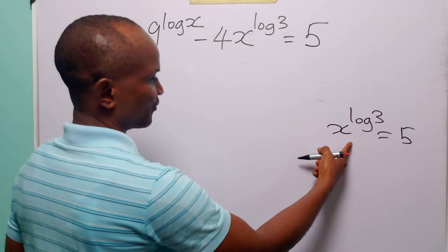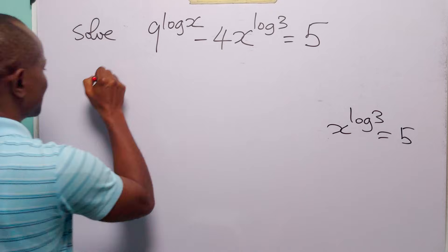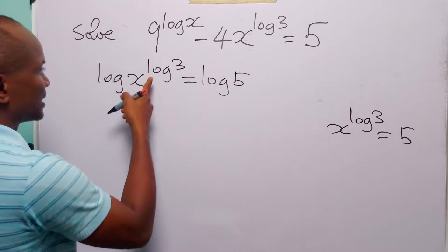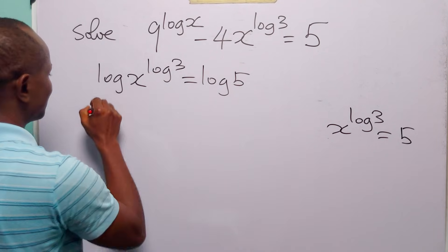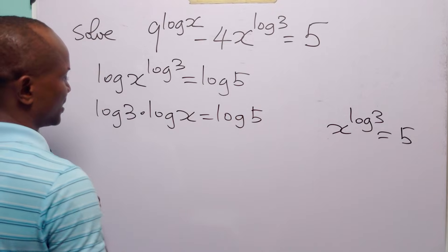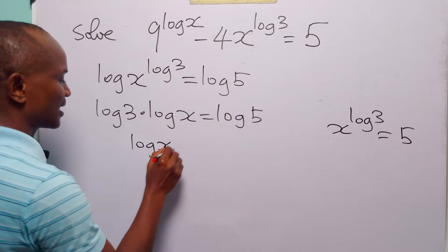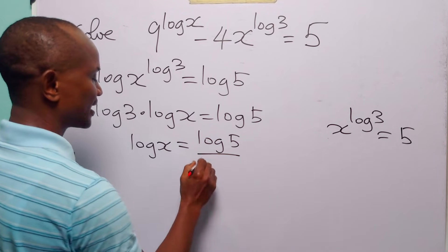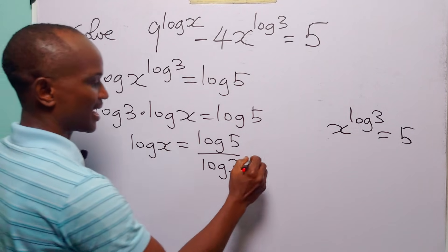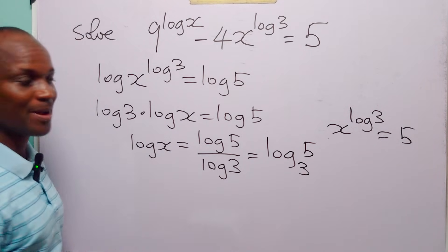To find x, we solve x to the power log 3 equals 5 by taking log of both sides: log of x to the power log 3 equals log 5. Applying the power rule, log 3 times log x equals log 5. Dividing both sides by log 3, we get log x equals log 5 divided by log 3. By the change of base formula, we can write this as log base 3 of 5.